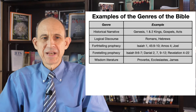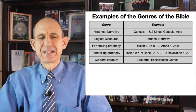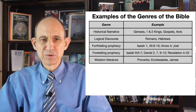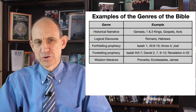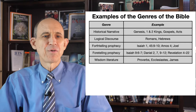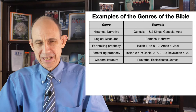The next genre is wisdom literature. Wisdom literature is different from logical discourse. Logical discourse typically states theological truths that are universal, absolute, and without exception. But wisdom literature focuses on skill for living — it often states truths that are generally true but not always true. We have Proverbs, we have Ecclesiastes, and many people would classify the New Testament book of James as being in many ways like the wisdom literature of the Old Testament.